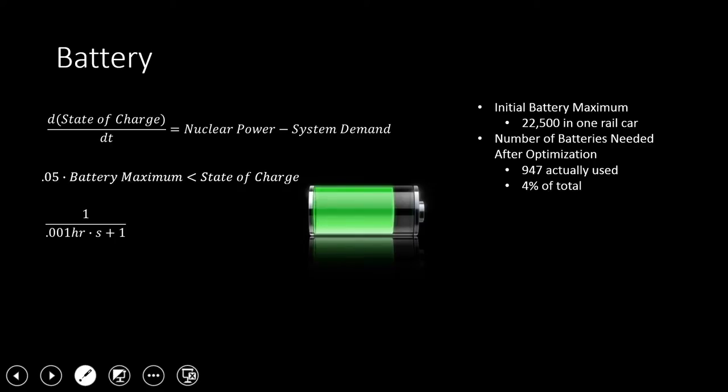In order to compensate for the slow response time of the nuclear reactor, it was necessary to use an array of batteries to produce the energy where the nuclear reactor couldn't meet the demand. We modeled the change of the state of charge of the battery as the energy that the nuclear reactor could produce and then subtracted off the demand of energy the train required. In our optimizer, one of our objective functions was to minimize the number of batteries in our array. To do this we assumed the volume of a standard rail car full of batteries and then found the energy that could be produced by this, and set our state of charge to be always greater than 5% of this maximum energy that the array could produce.